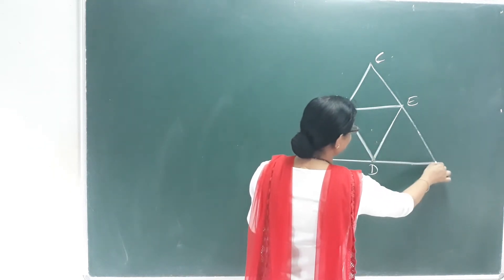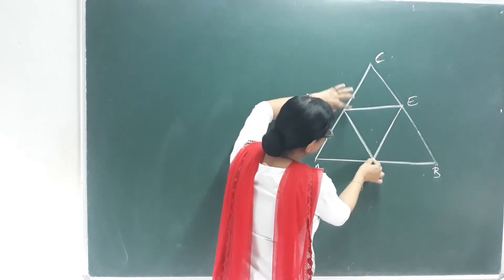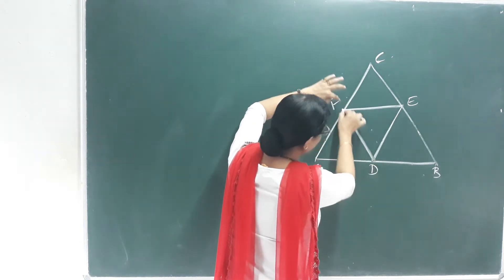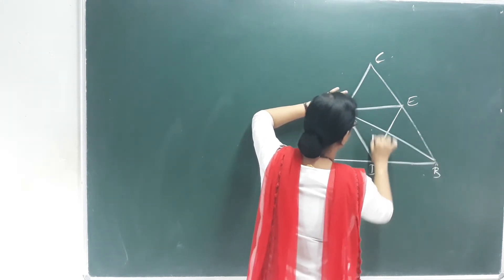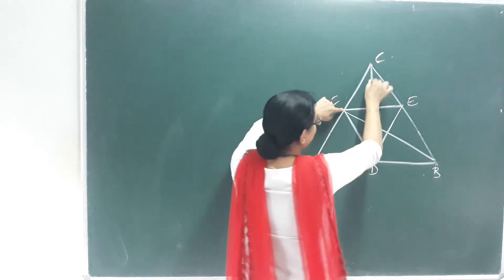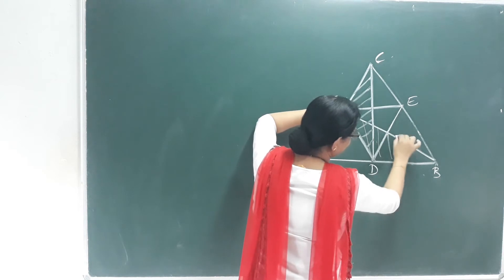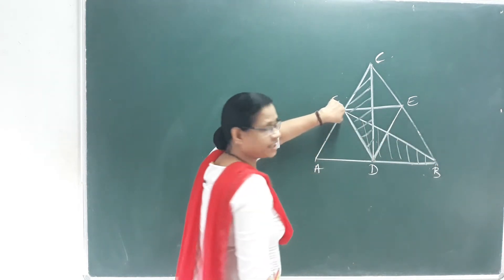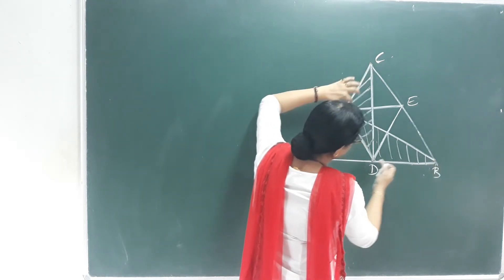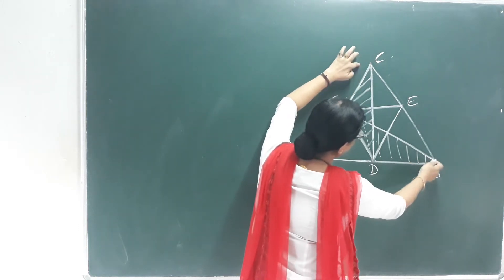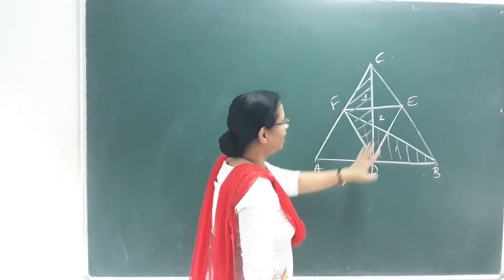Let me show you here. This line segment is parallel to this point. DF is parallel to BC. These two are parallel, and these two are parallel. So these three triangles sharing the same base and height have the same area.